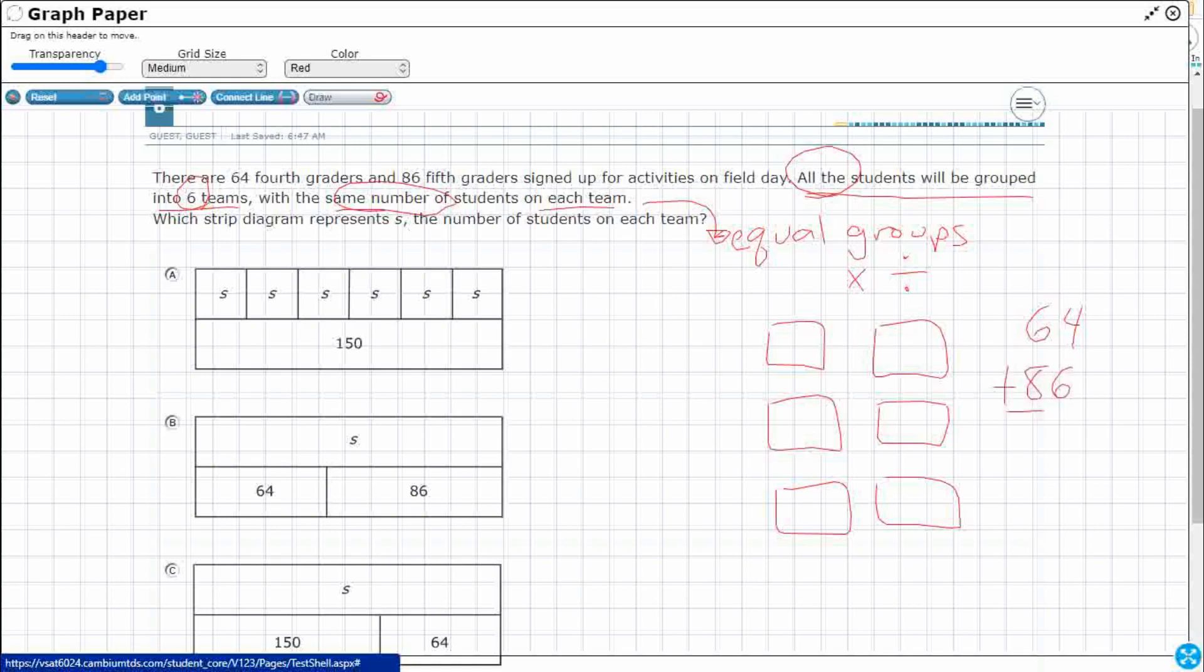64, 86. That's 150. So I've got 150 kiddos and I just need to divide them equally into six teams. So let's see. If I were to do that, we're going to divide here.